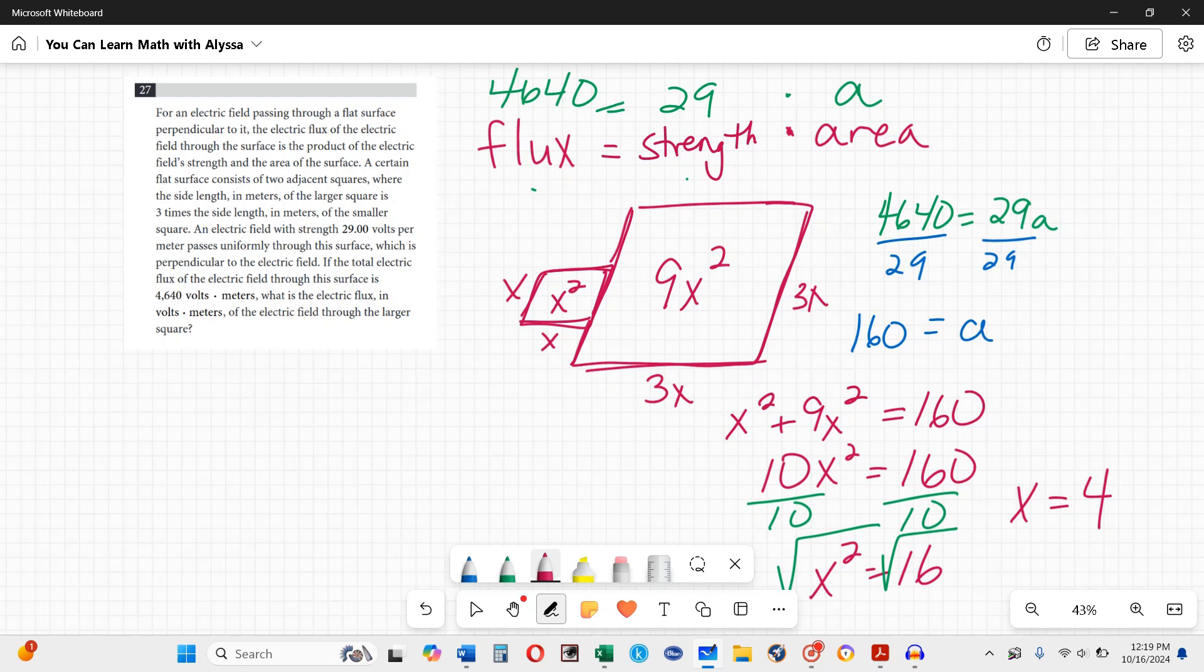I can go back up here to my sides. This side is 4 and this side is 4 because x is 4. Over here I have 3x and 3x. This side is 12, three times 4. That side is 12, three times 4.